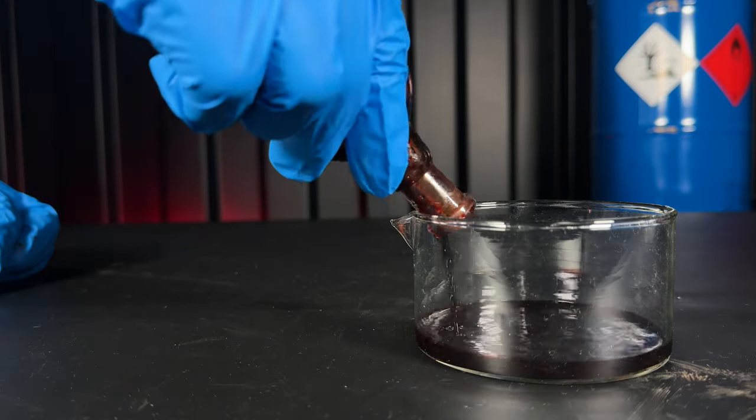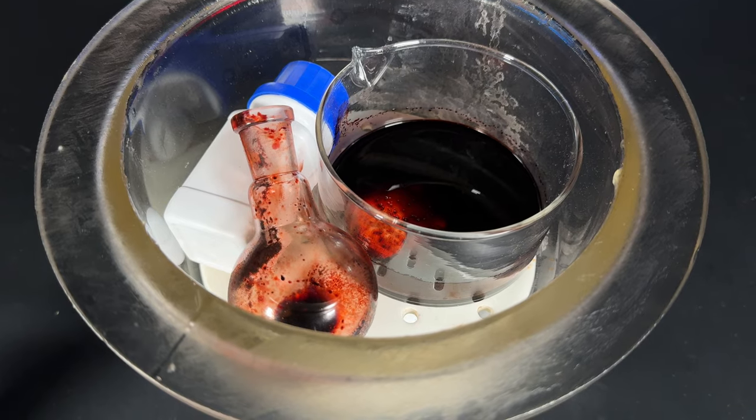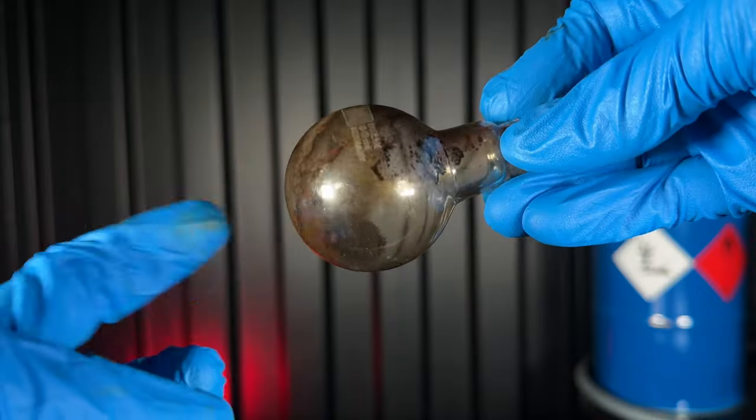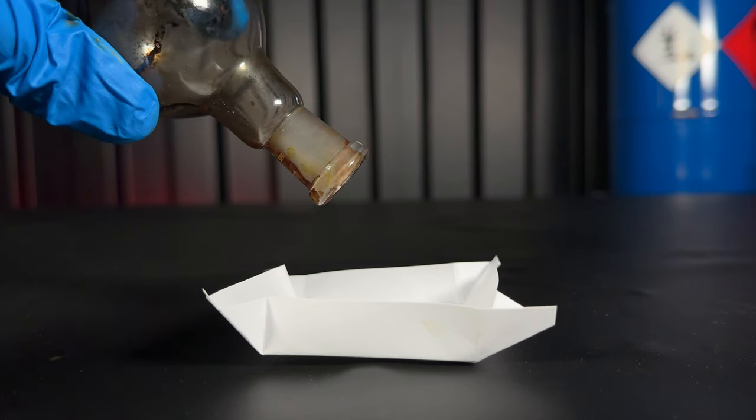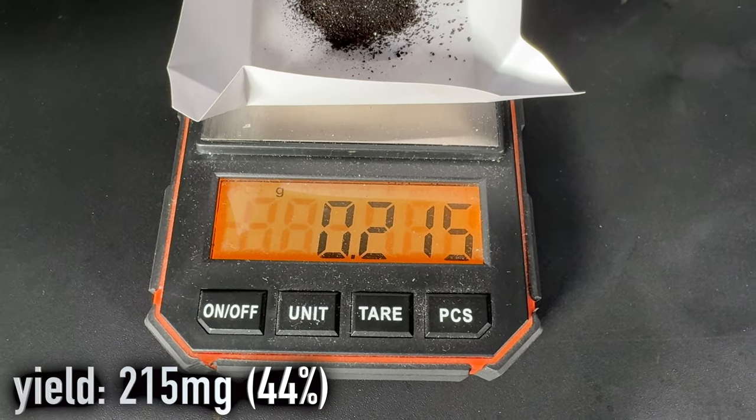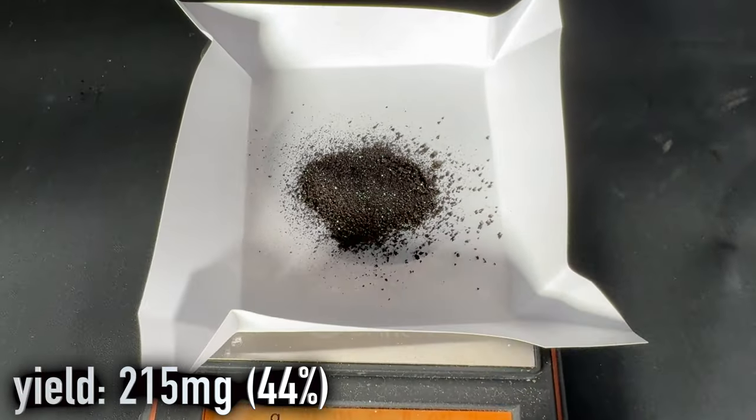I decanted off the remaining blood and put the flask into a desiccator. I evacuated it, let it stand overnight and the next day I was left with this black powder. In the end I got 215mg, which is a 44% yield.